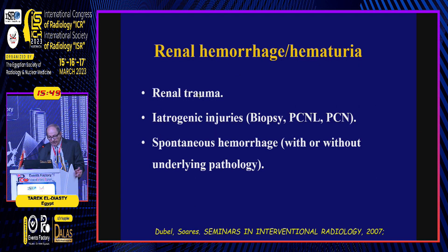Renal hemorrhage is usually due to trauma — blunt or penetrating — and now many cases involve iatrogenic injury after biopsy, percutaneous nephrolithotomy, or even percutaneous nephrostomy. Spontaneous hemorrhage with or without underlying pathology can be seen in less common cases.